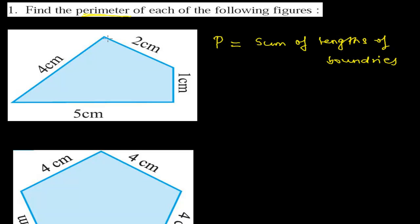Here also we're going to do the same thing — we'll be adding all the boundaries one by one, and that will give us the perimeter of whatever figure it is. So let's find out the perimeter of this figure. The perimeter will be the sum of all sides.